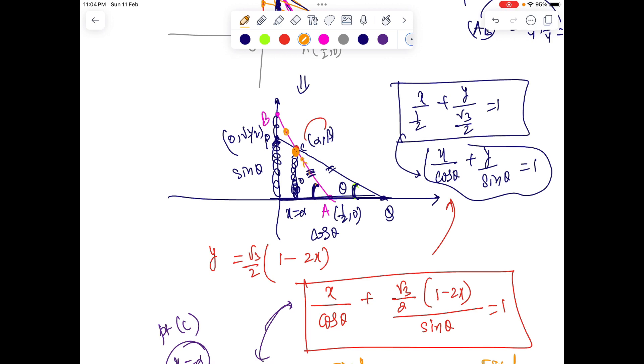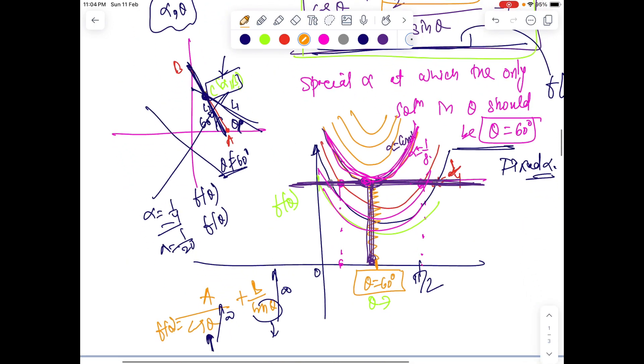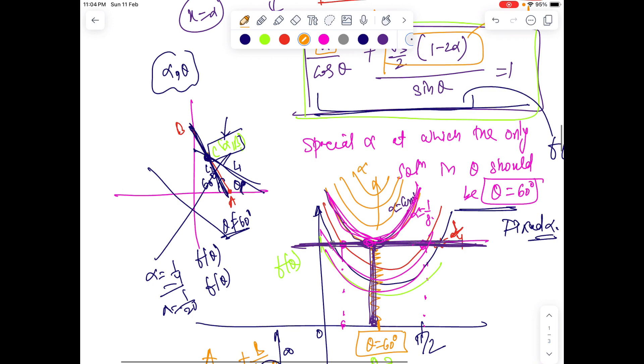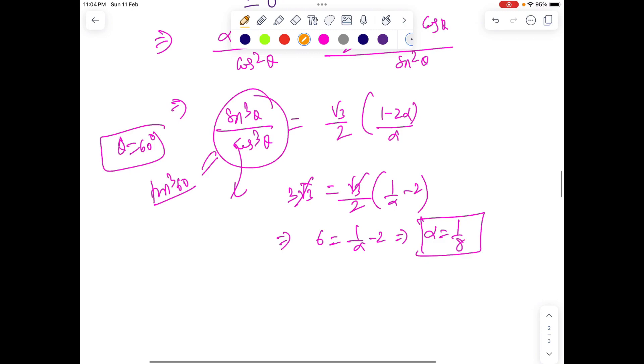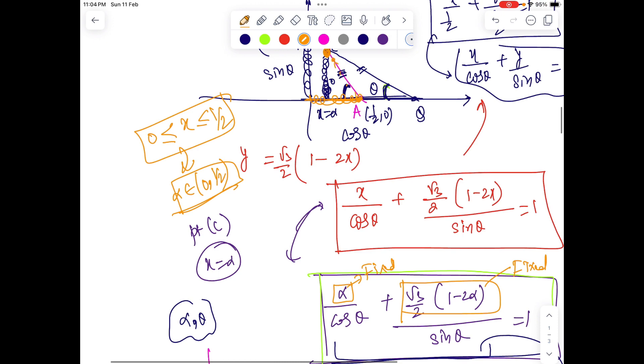If you take any other values of alpha more than one-half, practically it is not possible. These are all values of alpha more than one-half, which doesn't make any sense in the practical situation.